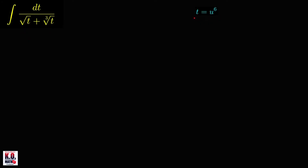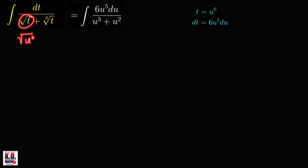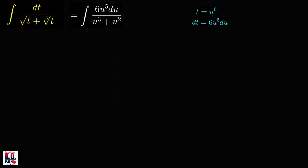If we let t equal to u raised to 6, then dt is equal to 6u raised to 5 du. Therefore, we can write our integral as integral of 6u raised to 5 du over u cubed plus u squared. The square root of t becomes square root of u raised to 6, which equals u cubed. And the cube root of t is cube root of u raised to 6, which equals u squared. As we can see, we were able to write our integrand as a rational function.